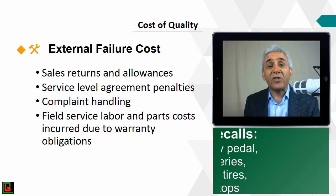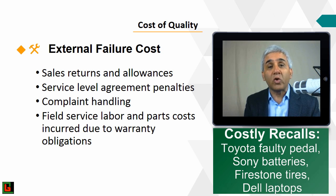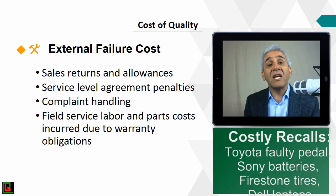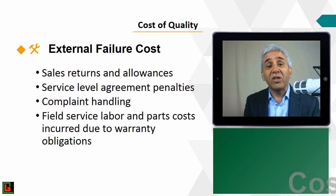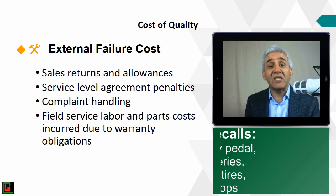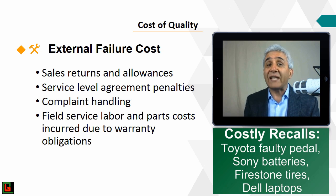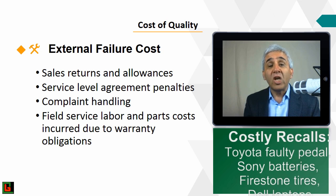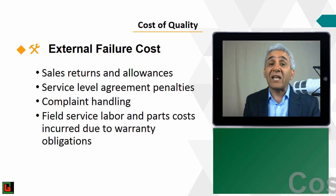Product recalls, not listed here, are another major external failure cost — companies have spent millions and billions of dollars on recalls, such as Toyota's recall in recent years. Make sure you spend sufficiently on prevention and appraisal so that you can avoid internal and external failure costs.